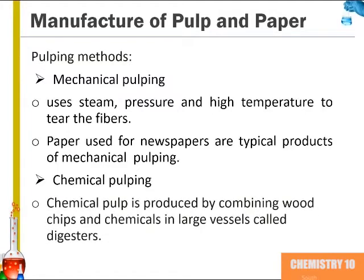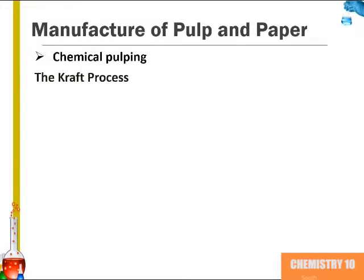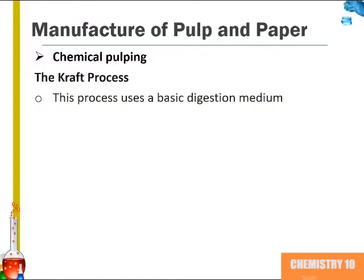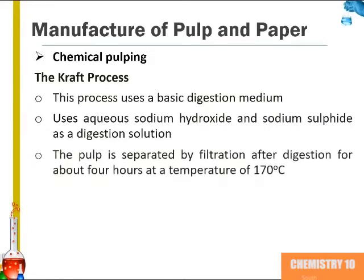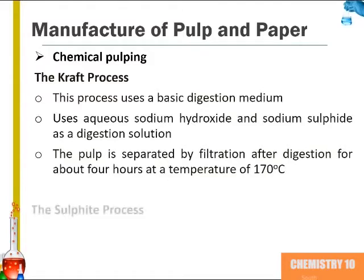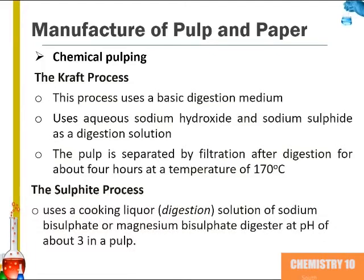Chemical pulping combines wood chips and chemicals in large vessels called digesters. There are two different methods of chemical pulping. The kraft process uses a basic digestion medium consisting of sodium hydroxide and sodium sulfide. After digestion of about four hours at a temperature of 170 degrees, the pulp is separated by filtration. The sulfite process uses a digestion medium containing a solution of sodium bisulfate or magnesium bisulfate at a pH of about 3, making it an acidic digestion medium, and again the pulp is recovered by filtration.